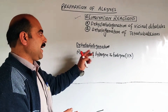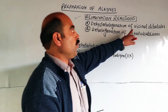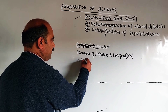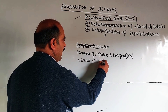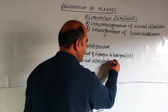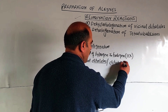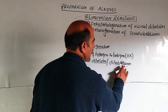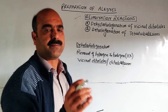Dehydrohalogenation: in organic chemistry, 'dehydro' means removal of a hydrogen, and 'halogenation' refers to the removal of a halogen. So dehydrohalogenation is the removal of a hydrogen as well as a halogen — removal of HX. Vicinal dihalides are also called dihaloalkanes — alkanes having two halogen atoms on adjacent carbon atoms.